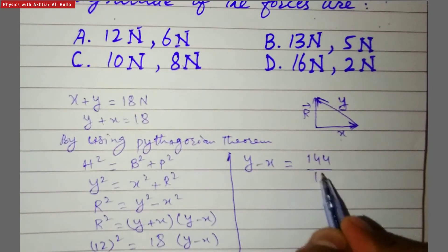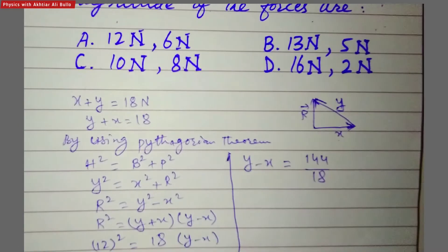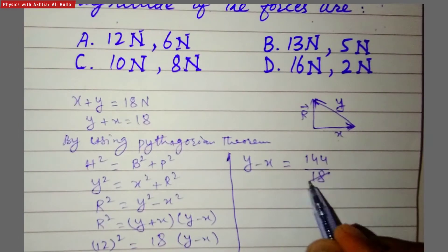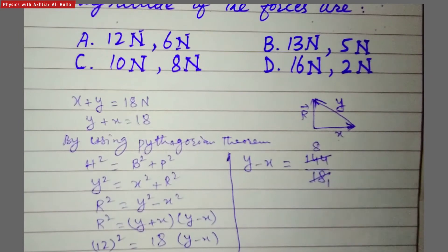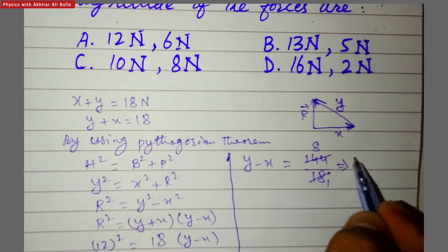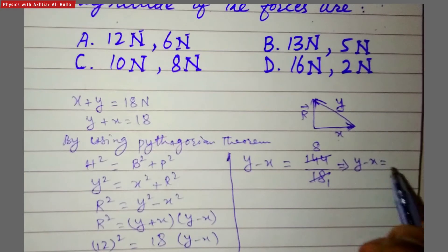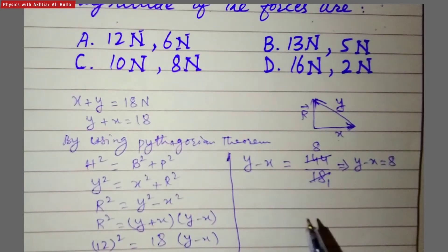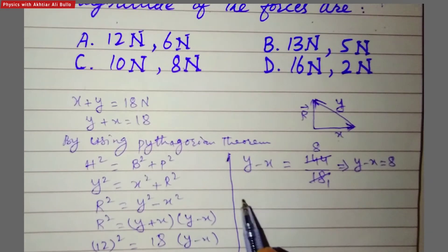18 goes into 144 eight times, so y minus x is obtained as 8. Now we need to calculate x and y.